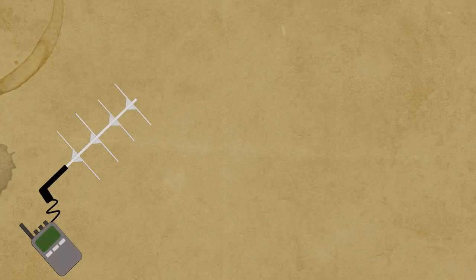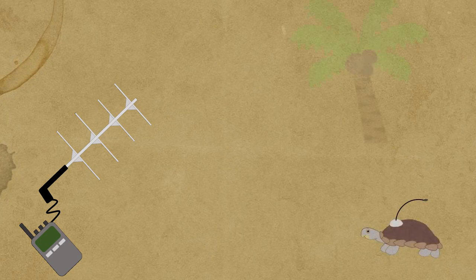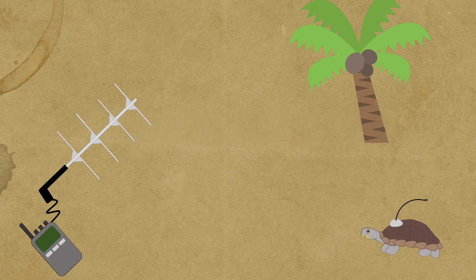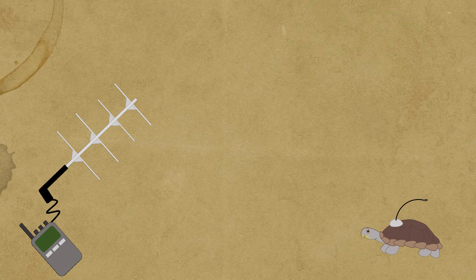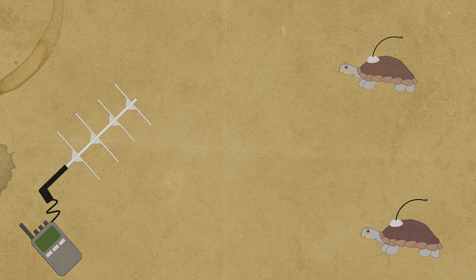I would be lying if I said you would never run into problems while using radiotelemetry. Bounce back and interference can confuse or mask the location of your transmitter. Additionally, if there are multiple transmitters with similar frequencies, you might pick up the frequency from another transmitter. Fiddling with the frequency on your receiver and pointing your antenna elsewhere, such as behind you, can often help you figure out the problem.